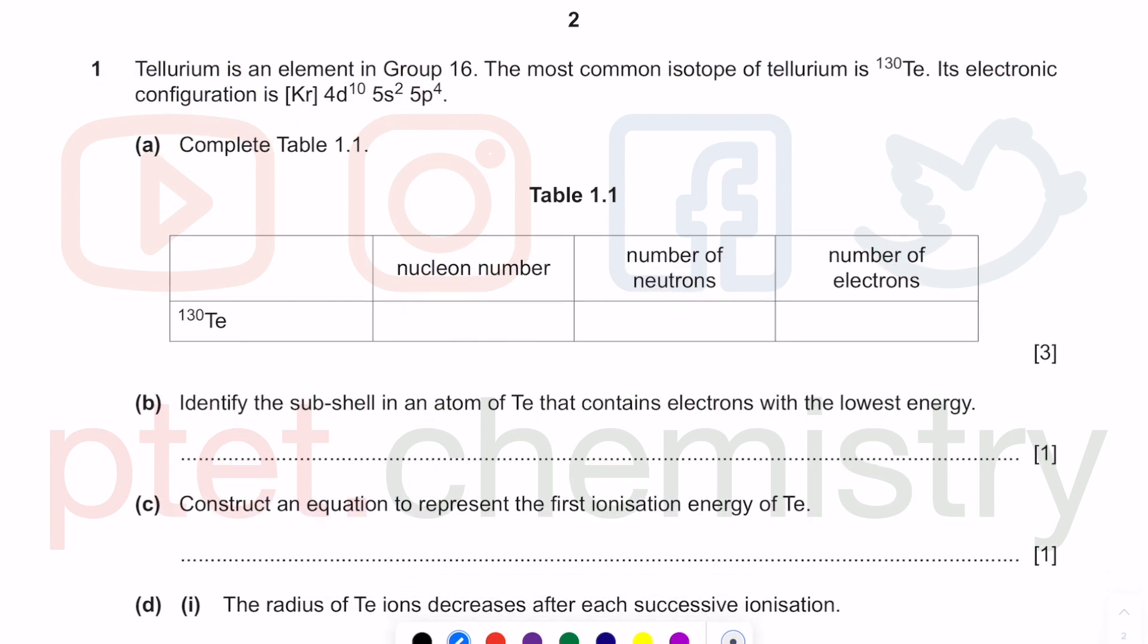In this first question, tellurium is an element in group 16, meaning it has six outer shell electrons or six valence electrons. Looking at the electronic configuration, we can see it fills up to period number five, the fifth shell. The number of shells you fill up to is called your period number, the fifth row in the periodic table.